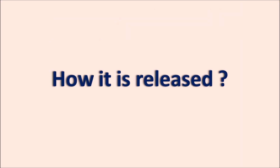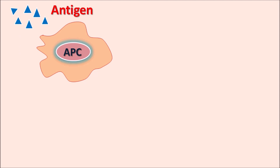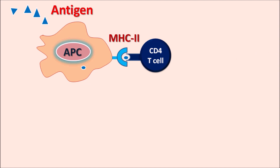One of the important stimulations for IL-6 release is the immune response. Whenever a viral or other type of infection introduces foreign bodies acting as antigens, these antigens are recognized by APCs — antigen-presenting cells. The antigens bind to the APC, which digests them, resulting in antigen fragments. These fragments are presented by MHC2 — major histocompatibility complex 2 — molecules, which are then recognized by CD4 T cells. In this way, the antigen stimulates T cell activation.